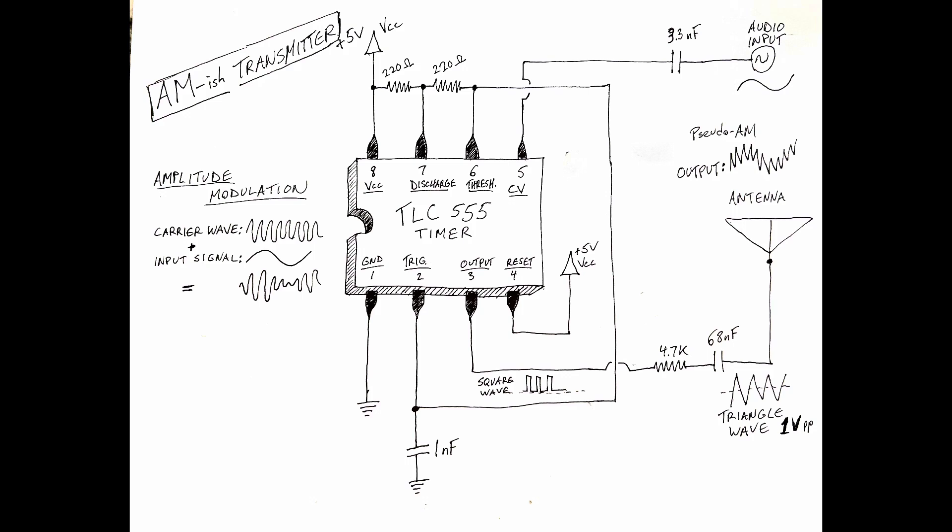And basically by putting the audio signal through a capacitor on the input of the control voltage pin, which is pin 5, you can get a sort of AM transmitter that works.